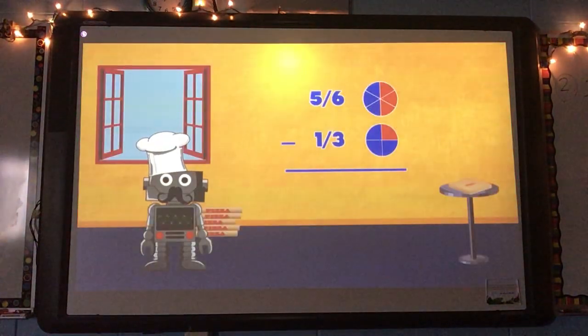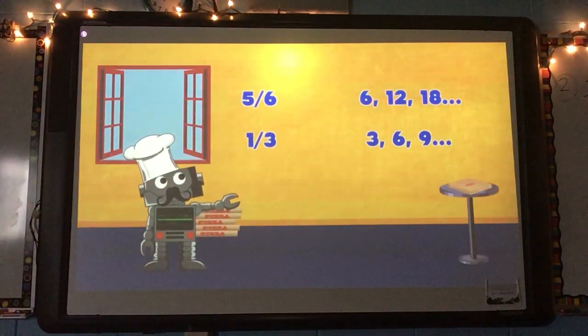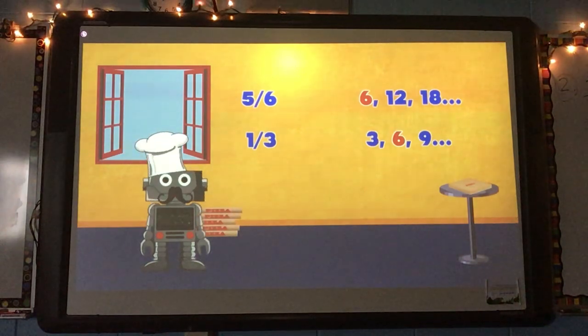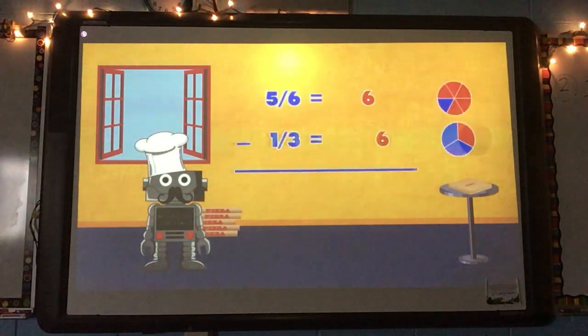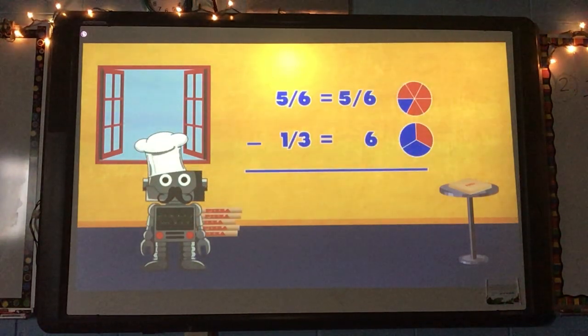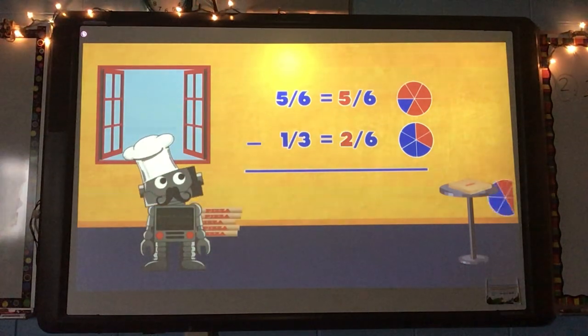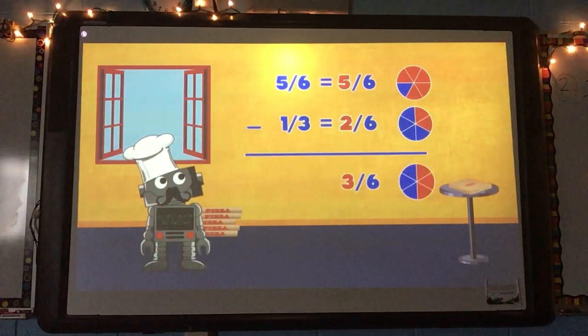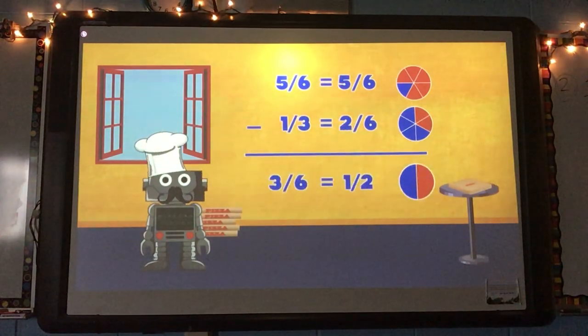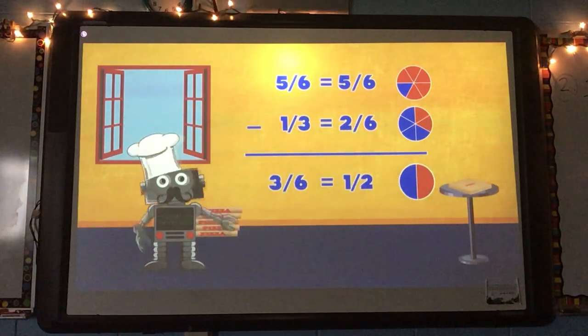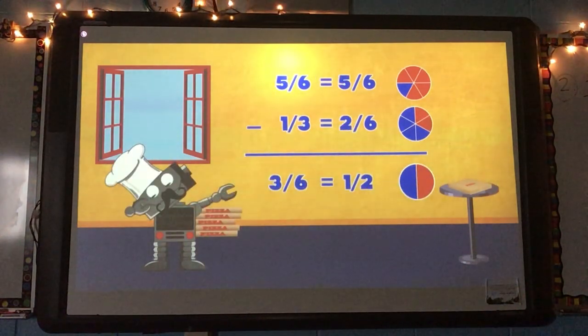Find the least common multiple — that's the first action. Next is finding equivalent fractions. Then do the addition or subtraction. Simplify like an automatic reaction.